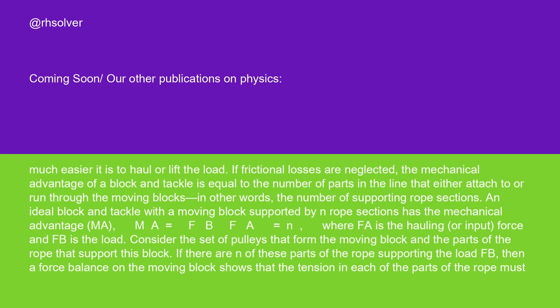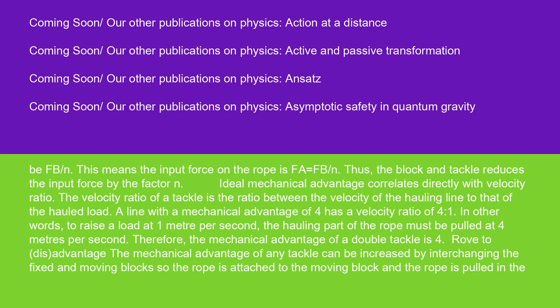Consider the set of pulleys that form the moving block and the parts of the rope that support this block. If there are N of these parts of the rope supporting the load FB, then a force balance on the moving block shows that the tension in each of the parts of the rope must be FB / N. This means the input force on the rope is FA = FB / N. Thus, the block and tackle reduces the input force by the factor N.